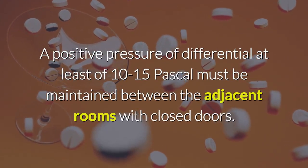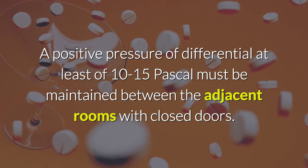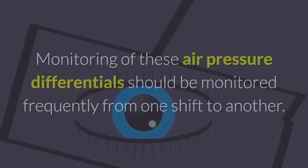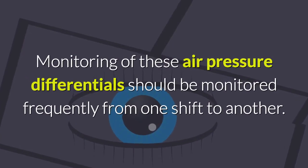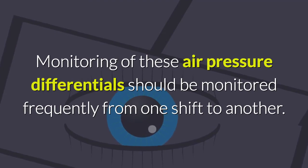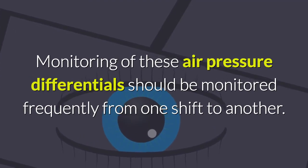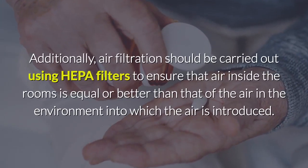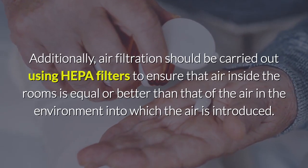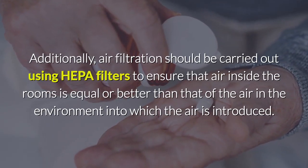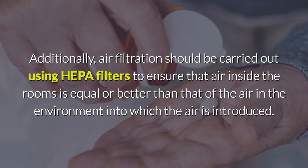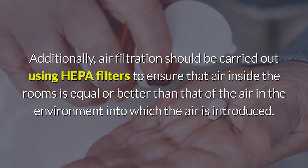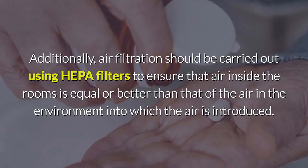A positive pressure differential of at least 10 to 15 Pascal must be maintained between adjacent rooms with closed doors. Monitoring of these air pressure differentials should be conducted frequently from one shift to another. Additionally, air filtration should be carried out using HEPA filters to ensure that the air inside the rooms is equal to or better than the air in the environment into which it is introduced.